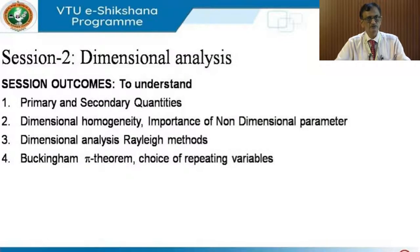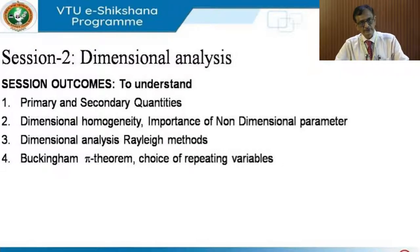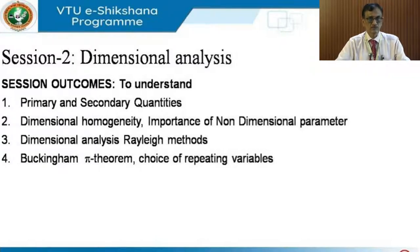Hello, my dear students. We will continue our discussion. As discussed in the previous class, we have understood what are the primary variables, what are the secondary variables, and what we mean by dimensional homogeneity — the MLT terms on the left-hand side and right-hand side of the equation remain the same. We have three similarities between the model and the actual: geometric similarity, kinematic similarity, and dynamic similarity.